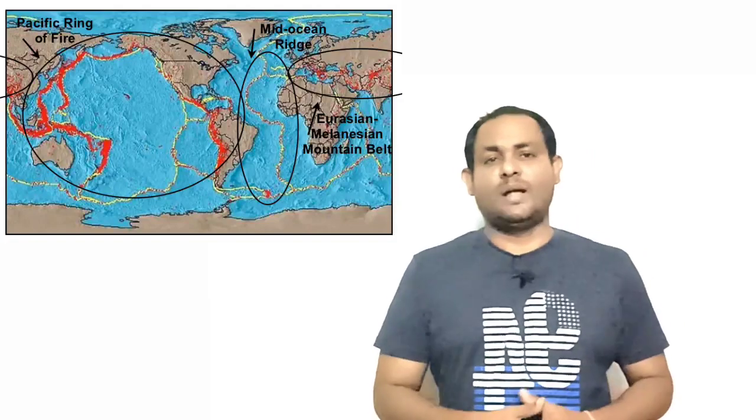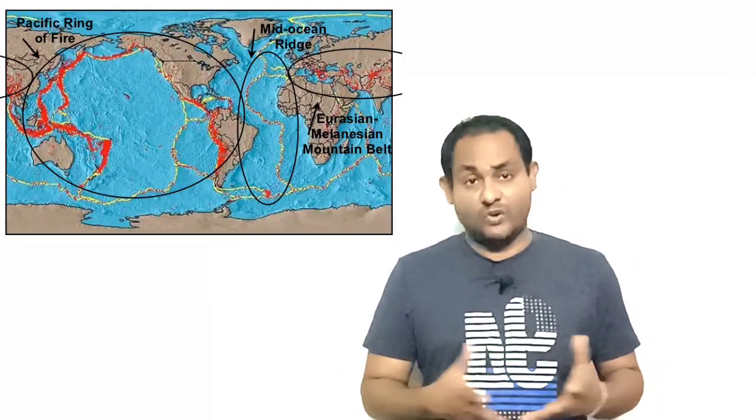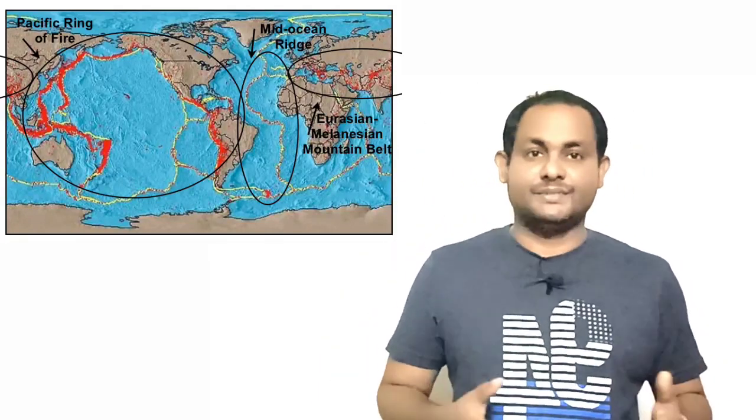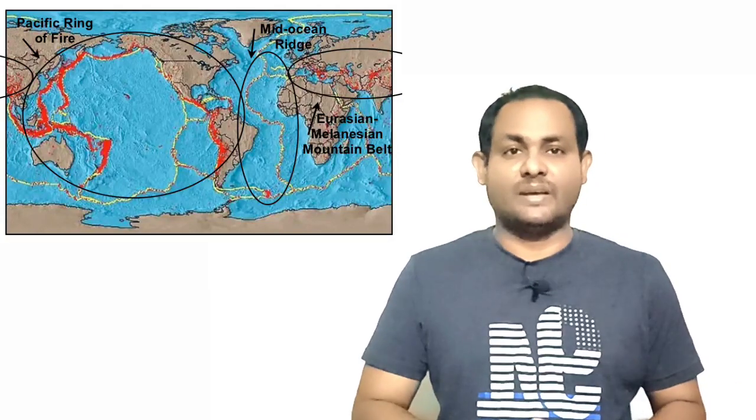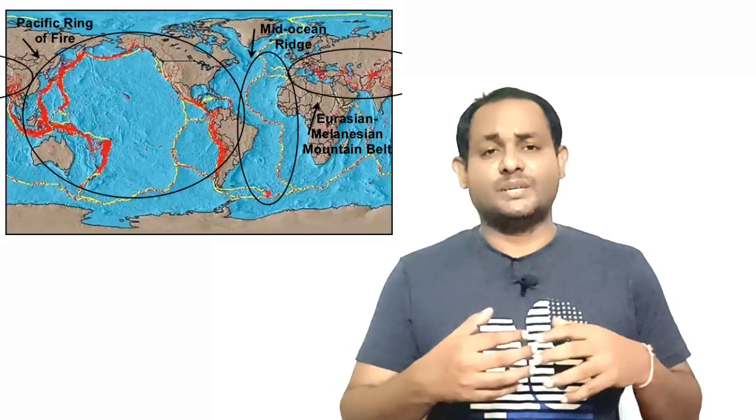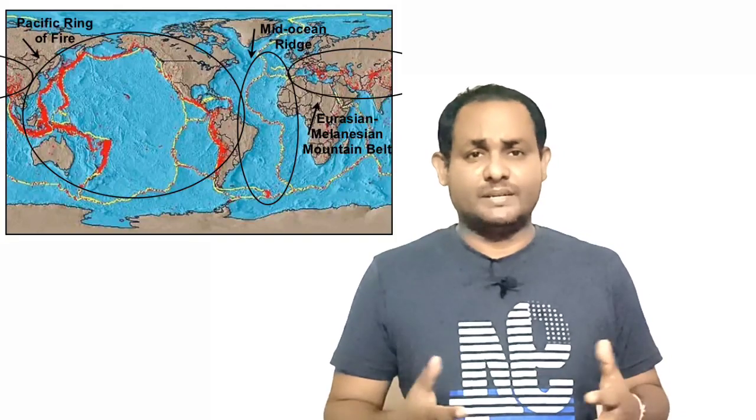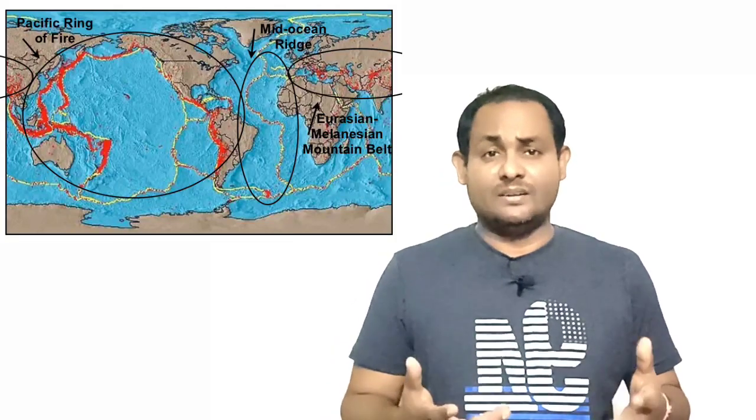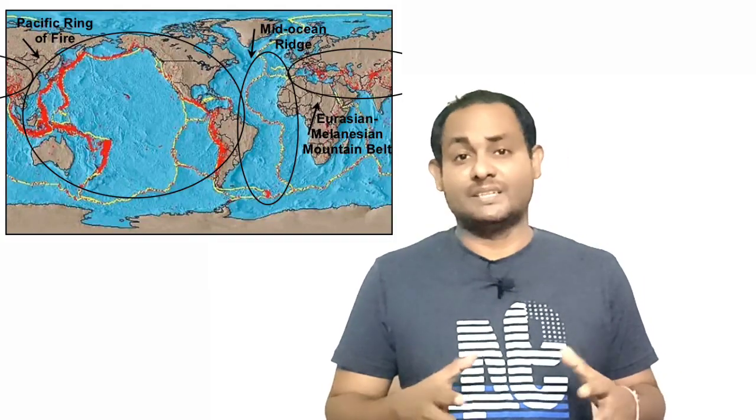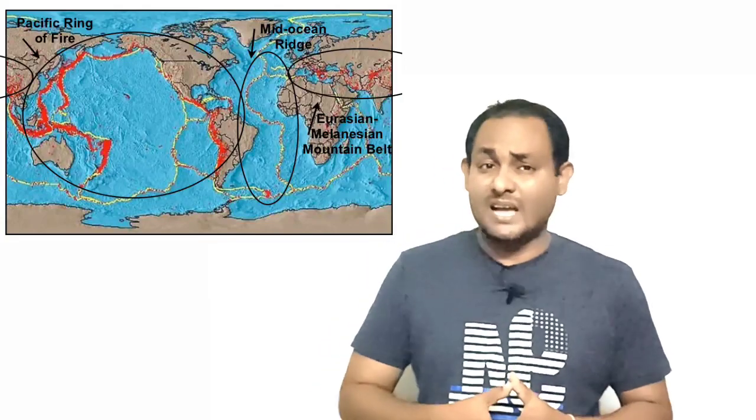Intraplate seismicity: although most of the world's seismicity occurs along plate boundaries, continental platforms also experience infrequent and scattered shallow focus earthquakes. Zones of earthquakes in East Africa, western United States, and peninsular India are examples of such smaller intraplate earthquakes.